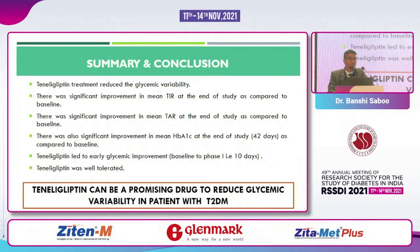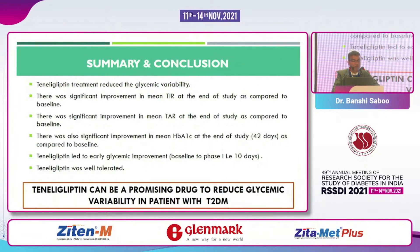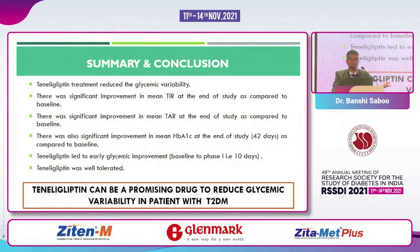To conclude: teneligliptin treatment reduced glycemic variability as seen in the TOP-TIR study. There was significant improvement in mean time in range at the end of study compared to baseline. There was significant improvement in mean time above range — which was very high in uncontrolled diabetic patients — and it significantly reduced. There was also significant improvement in mean HbA1c, even at only 42 days. The TEDDY study over 12 weeks showed even better results, with significant p-values for A1c reduction in both groups.